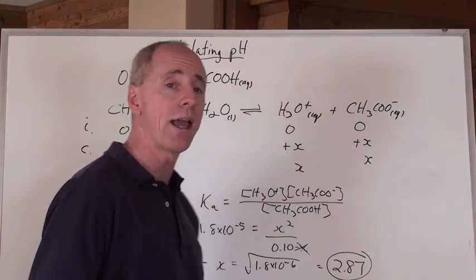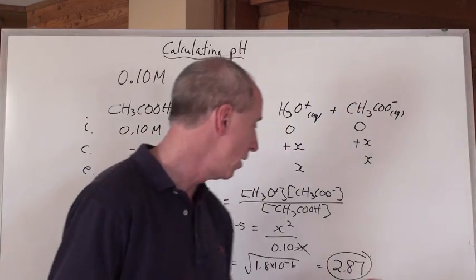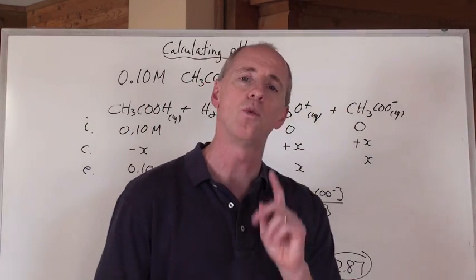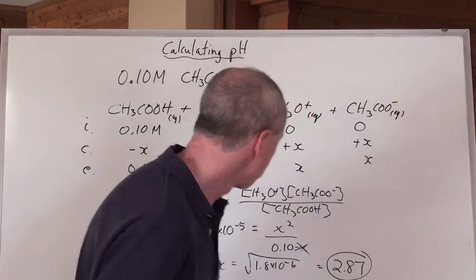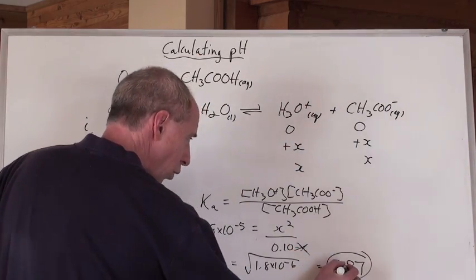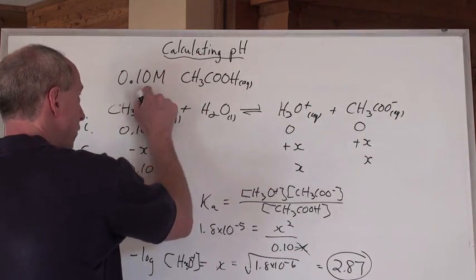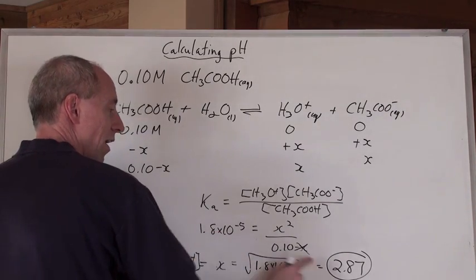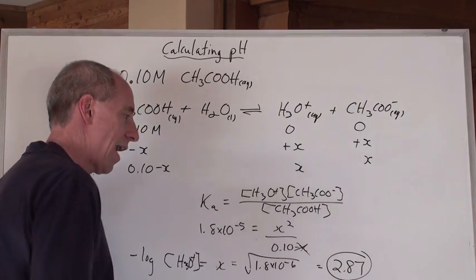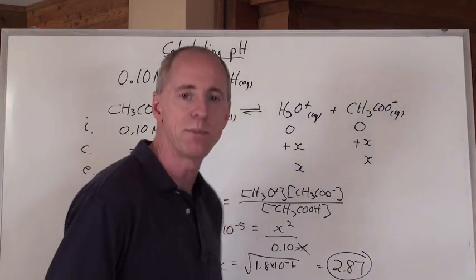Yeah, the pH of that, if it was a strong acid, would have been 1.00. But it's really 2.87 because it's a weak acid. Now, so again, 2 significant digits, and there was 2 significant digits in the Ka value, so that's why I kept 2 numbers after the decimal in that pH.